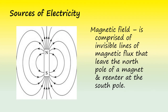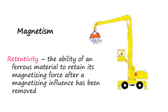Magnets produce lines of magnetic flux that leave the north pole and re-enter at the south pole. Retentivity is the ability of a ferrous material to retain its magnetizing force after a magnetizing influence has been removed. This property is used in electromagnets at salvage yards. An electrical current is applied to a piece of ferrous material with a low retentivity, or little ability to maintain a magnetizing force after the current has been removed. This current magnetizes the piece and allows it to pick up and move iron and steel scrap. The electrical current is then cut off, demagnetizing the device, allowing the iron and steel scrap to drop.